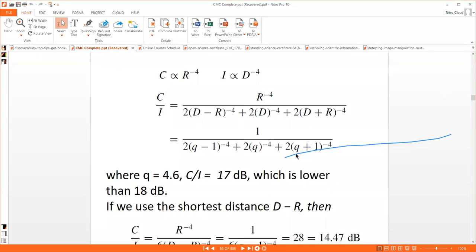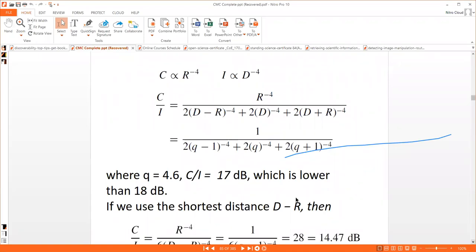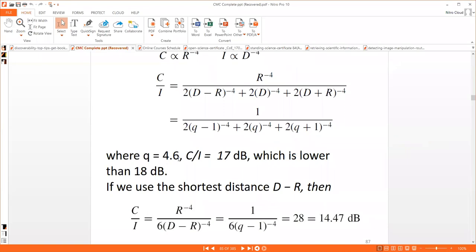This first case scenario uses distances of d, d plus r, and d minus r. When q equals 4.6, the frequency reuse distance factor, C/I is automatically given by 17 decibels. But actually, the basic value must be greater than or equal to 18 decibels, so 17 dB is lower than required.